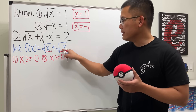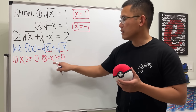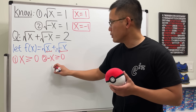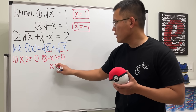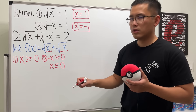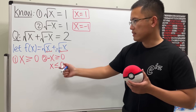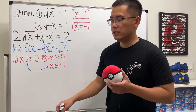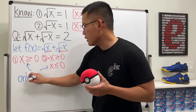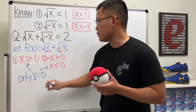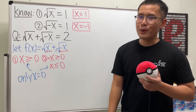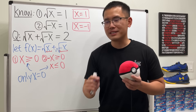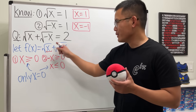Since -x ≥ 0, dividing both sides by negative one gives x ≤ 0. Combining these two conditions — x ≥ 0 and x ≤ 0 — the only number that satisfies both is x = 0. So this function is actually just a single point, because we can only plug in zero.